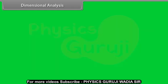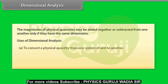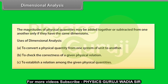Dimensional analysis: The magnitudes of physical quantities may be added together or subtracted from one another only if they have the same dimensions. Uses of dimensional analysis: A. To convert a physical quantity from one system of unit to another. B. To check the correctness of a given physical relation. C. To establish a relation among the given physical quantities.